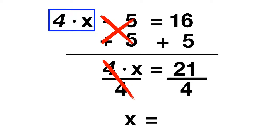But 21 divided by 4 doesn't give us a clean answer, so we can just leave it as a fraction and say x is equal to 21 fourths. Now it's time for you to try solving some problems on your own. Solve the equation 4 minus x equals 10. What does x equal?